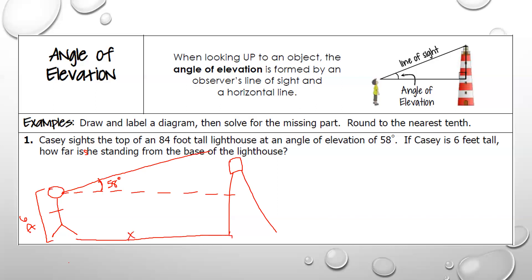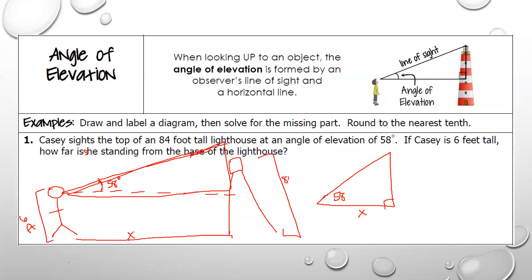In all of this I'm hoping you can see a right triangle. The right triangle has 58 degrees, and we are looking for x. The lighthouse is 84 feet tall and Casey is 6 feet tall, so this side here is 6. Then the distance from Casey's eye level to the top of the lighthouse is 84 minus 6, which tells us this is 78. So in my right triangle, that side is 78.